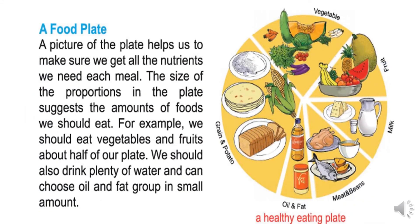A food plate. A picture of the plate helps us to make sure we get all the nutrients we need each meal. The size of the proportions in the plate suggests the amount of foods we should eat. For example, we should eat vegetables and fruits for about half of our plate. We should also drink plenty of water and choose oil and fat group in small amounts.